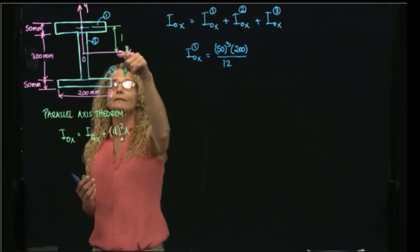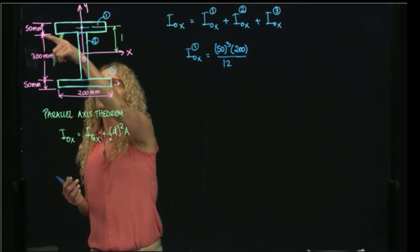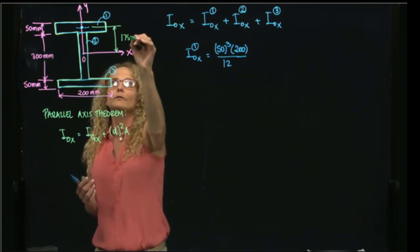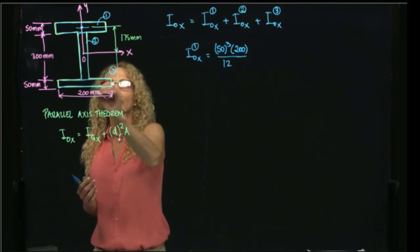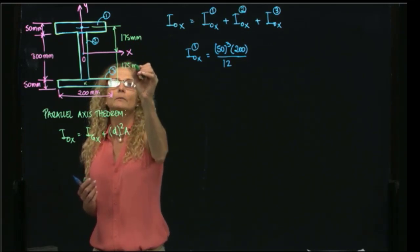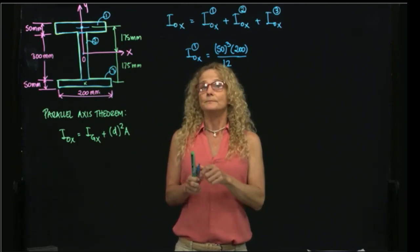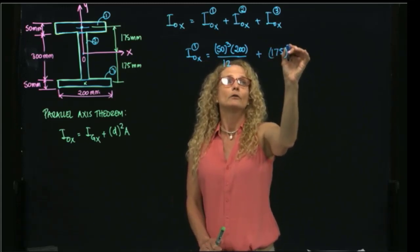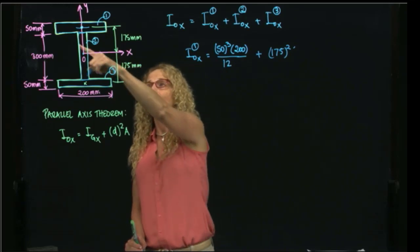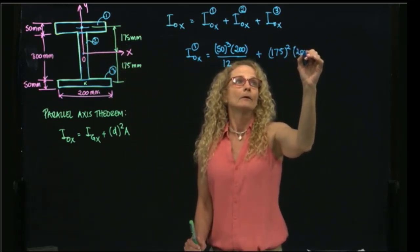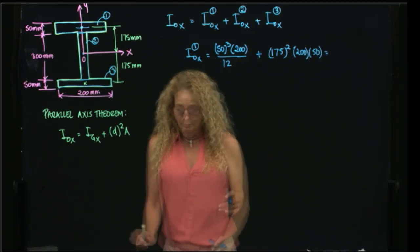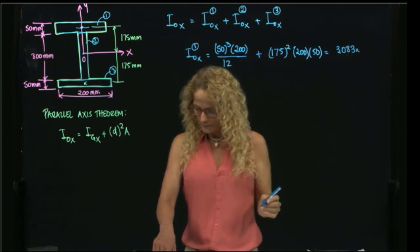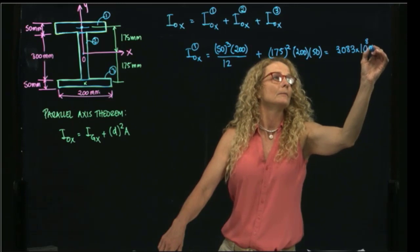So I have to find this distance. In this case, this distance will be 300 divided by 2 plus 50 divided by 2, so that equals 150 plus 25, 175 millimeters. And in this case, I will need that as well, and this is 175 millimeters as well. So then this will be plus my distance, which I already said is 175 squared times the area, and the area will be base times height. And I have that number: 3.083 times 10 to the 8 millimeters to the 4th. So that's the first value.